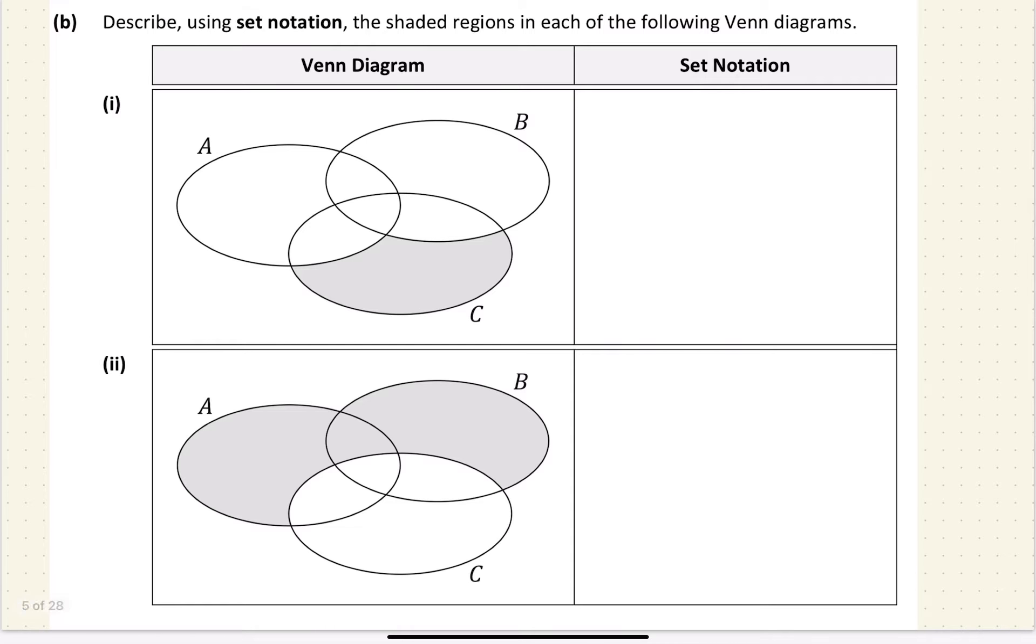Describe using set notation the shaded regions in each of the following Venn diagrams. So to do this, I keep an eye on the set that is shaded. C is partially shaded here. C has got this shaded here, but anything shared with A is gone. Anything shared with B is gone. So I'm going to say that is C less A union B. So it's everything in C, take away everything that's in A and everything that's in B.